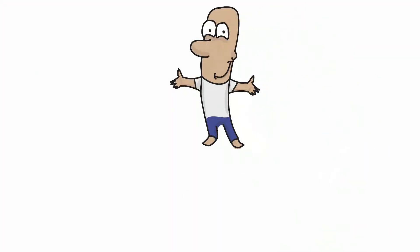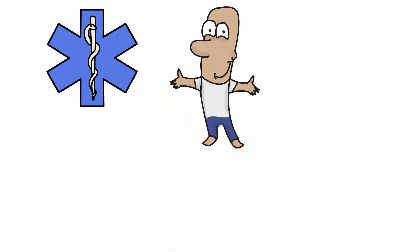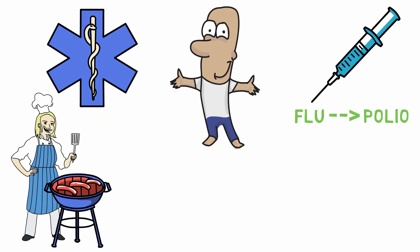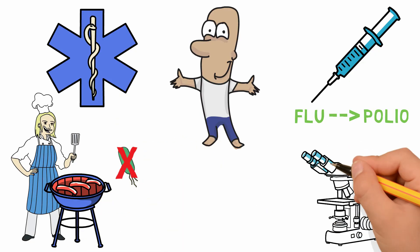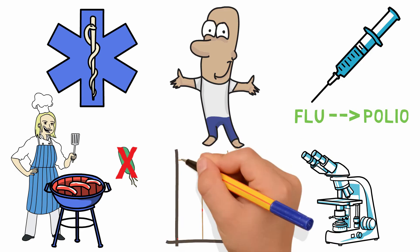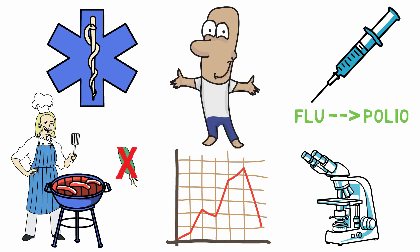Now for some positivity. Modern medicine and hygiene have come a long way. We have many vaccines that protect us from everything from the flu to polio. We know much more about how to prepare food so that it is safe to eat and free from bacteria. And we have a much better understanding of how diseases spread so that we can react quickly to stop the progression of many potential epidemics and pandemics.